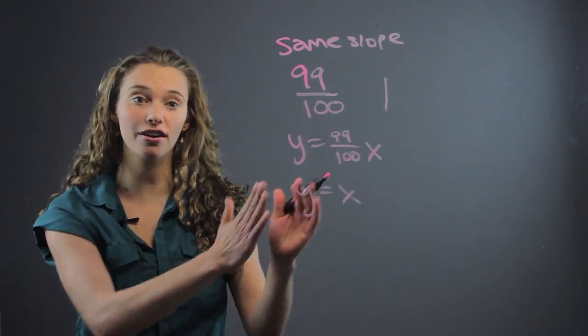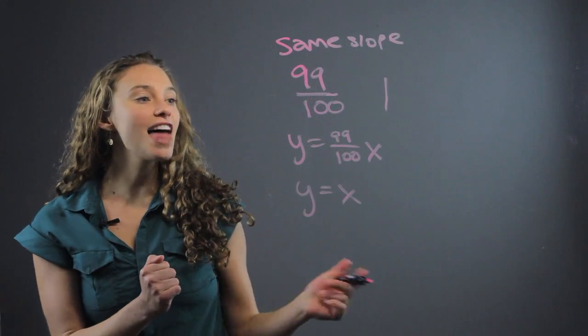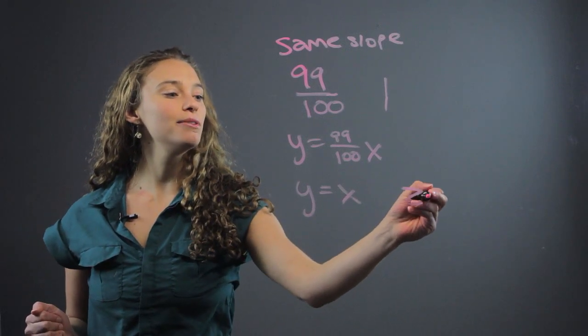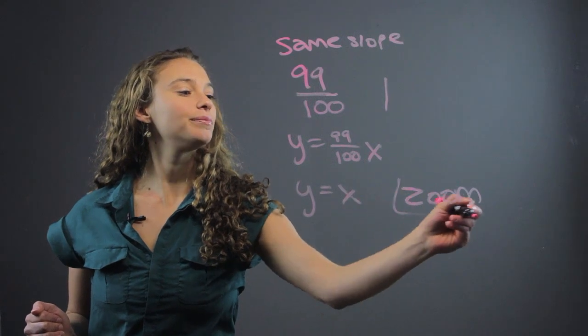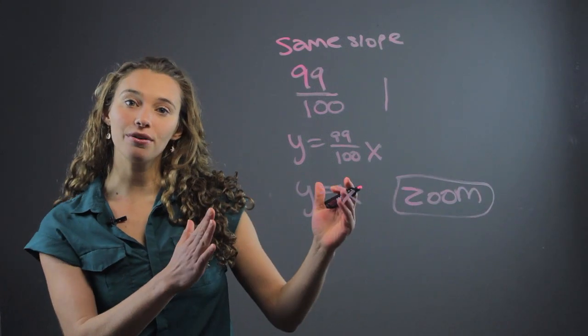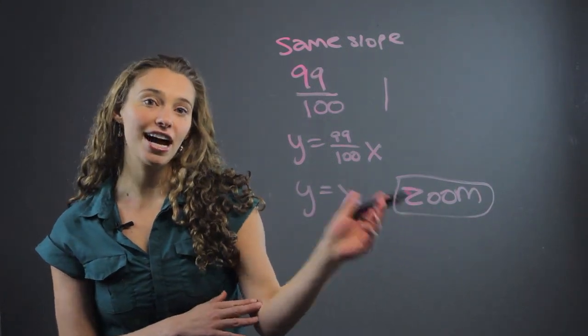Those are going to look like they're parallel and then you can use the zoom function on a graph to zoom out. This is great on a graphing calculator.